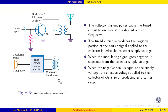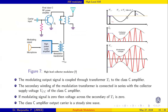In the high-level AM modulator circuit, we have VCC, a tank circuit, transformer T1, transformer T2, and the carrier signal is input to a Class C amplifier Q1. When the message signal is absent, the voltage across secondary T1 is zero and the output contains only VCC for the carrier signal. The collector current pulses cause the tuned circuit to oscillate at the carrier frequency, and the tuned circuit reproduces the negative portion of the carrier.